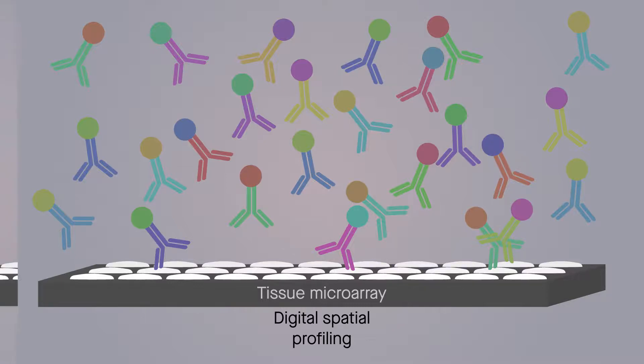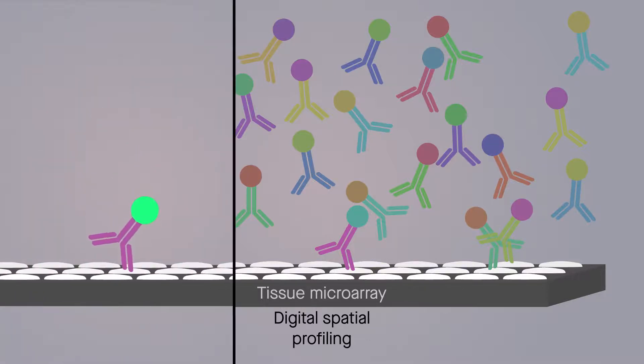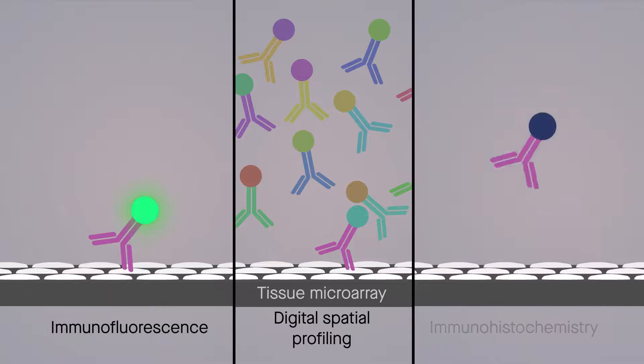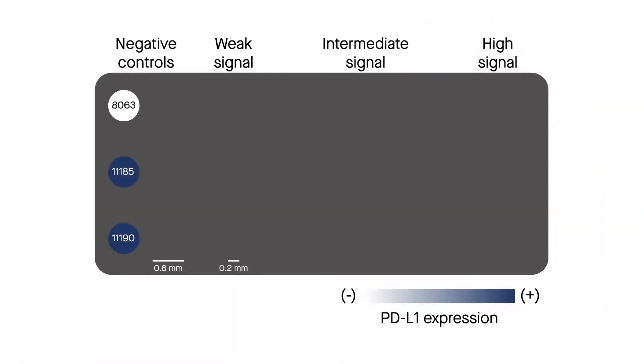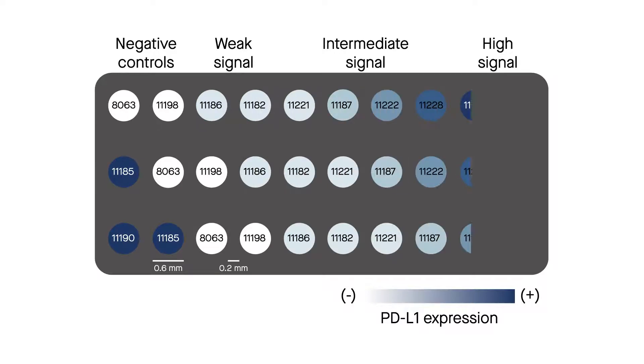The team behind the current study tested DSP against the two methods currently used to screen for PD-L1 expression, immunofluorescence and immunohistochemistry. They performed experiments on samples from 10 cell lines organized across a tissue microarray.